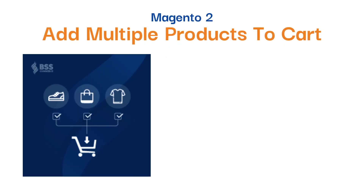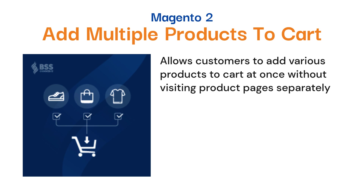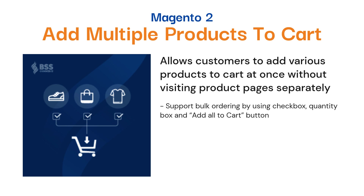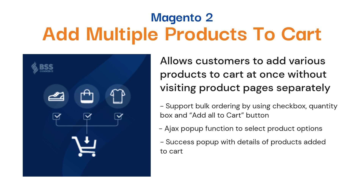Then we have Magento 2 Add Multiple Products to Cart module to add various products to cart at once without visiting product pages separately. It supports bulk ordering by using Checkbox, Quantity Box, and Add All to Cart button. It creates a success pop-up with details of products added to cart, and is compatible with the Checkout Success page extension.